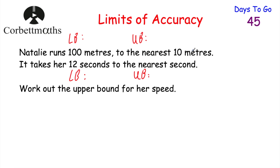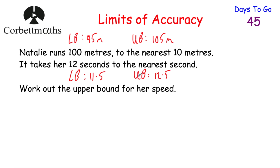She runs 100 metres to the nearest 10 metres, so the lower bound would be 95 metres and the upper bound would be 105 metres. In terms of the time taken, it's 12 seconds to the nearest second. So the lower bound for the time taken would be 11.5 seconds, and the upper bound for the time taken would be 12.5 seconds. So we have the lower and upper bounds for both the distance ran and the time taken.